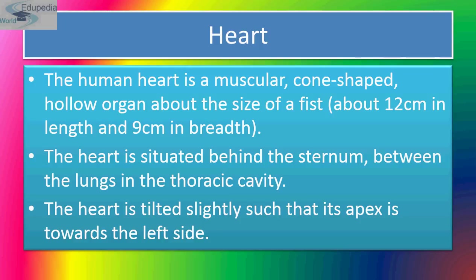In between the two layers, there is a fluid called pericardial fluid, which performs many functions. First, it acts as a shock absorber and protects the heart from mechanical shocks. Second, it prevents friction between the parietal and the visceral pericardium. Third, it keeps the heart moist and prevents its desiccation.